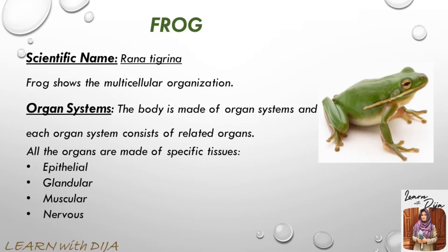The next example of multicellular organization is the frog. Its scientific name is Rana tigrina. It shows multicellular organization with tissues such as epithelial, glandular, muscular, and nervous tissues, which form organs and then organ systems.